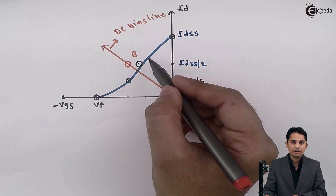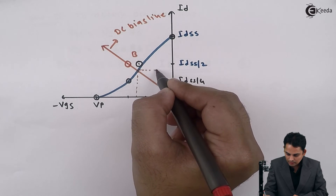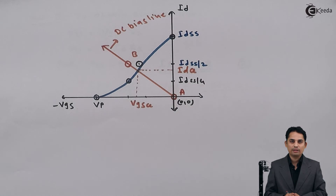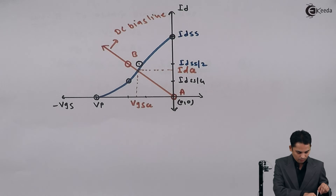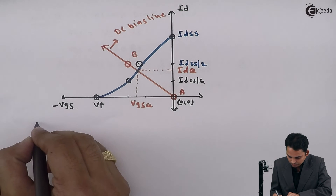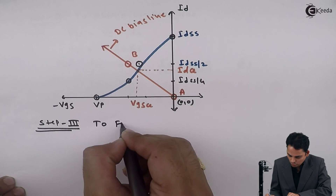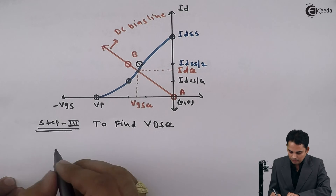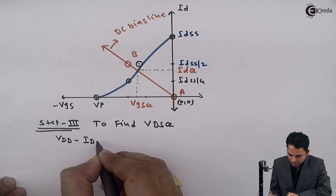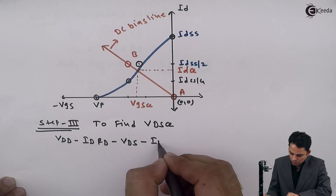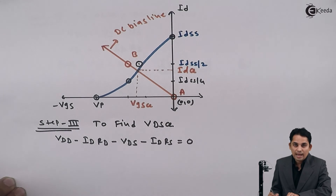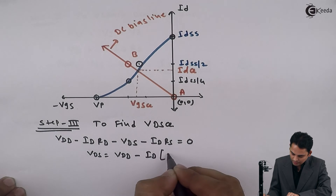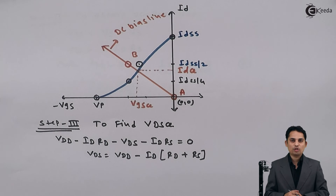The DC bias line and the transfer characteristics are drawn. The point of intersection is called Vgsq and Idq — these are the Q point of the JFET. In step 3, we find Vdsq by applying KVL to the output loop. The equation becomes: Vdd minus Id·Rd minus Vds minus Id·Rs equals 0, hence Vds equals Vdd minus Id into bracket Rd plus Rs.